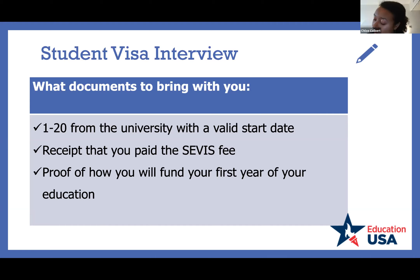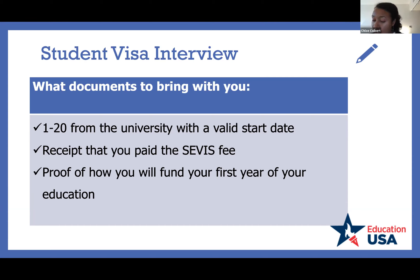Third, proof of how you will fund your first year of education. The Form I-20 is an official U.S. government form issued by a certified school, which a prospective non-immigrant student must have to get an F1 or M1 visa. It acts as proof of acceptance and contains the information necessary to pay the service fee, apply for a visa, and be admitted into the U.S. Proof of funding could include bank statements, a salary certificate from yourself or a parent, or proof of tuition payments already made.